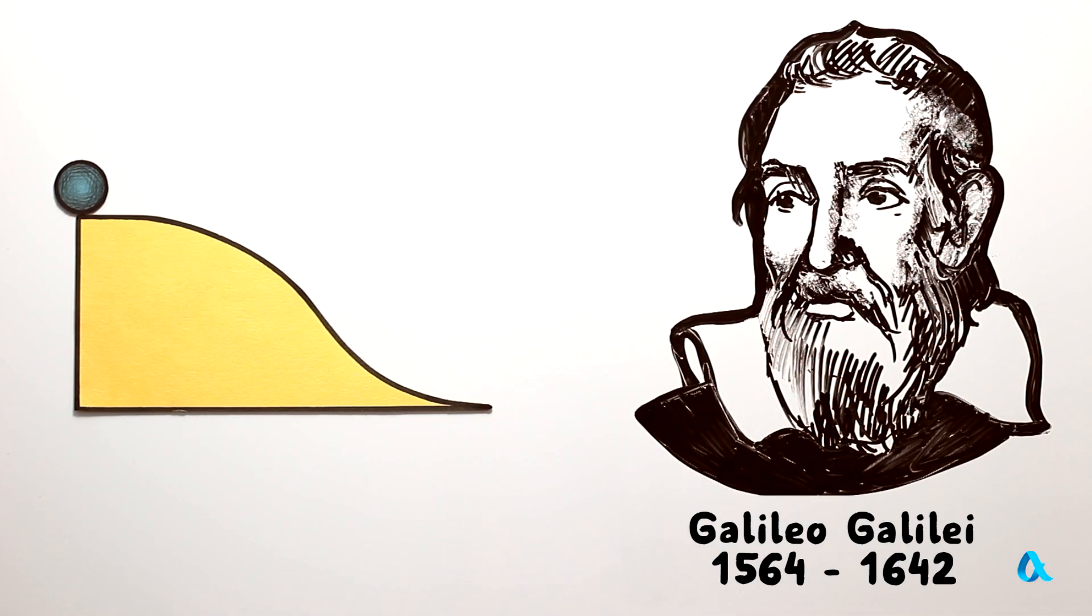Considering such slides, Galileo Galilei reasoned in the following way. If there are no losses, the motion of the ball is reversible. If we roll it back with the same speed up the same slide, it will get to the same height and stop.